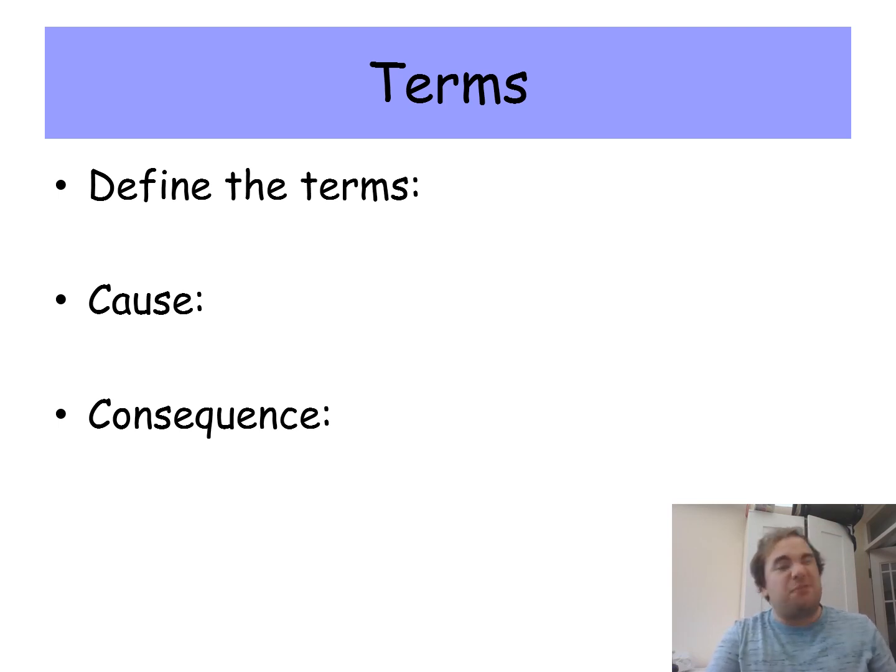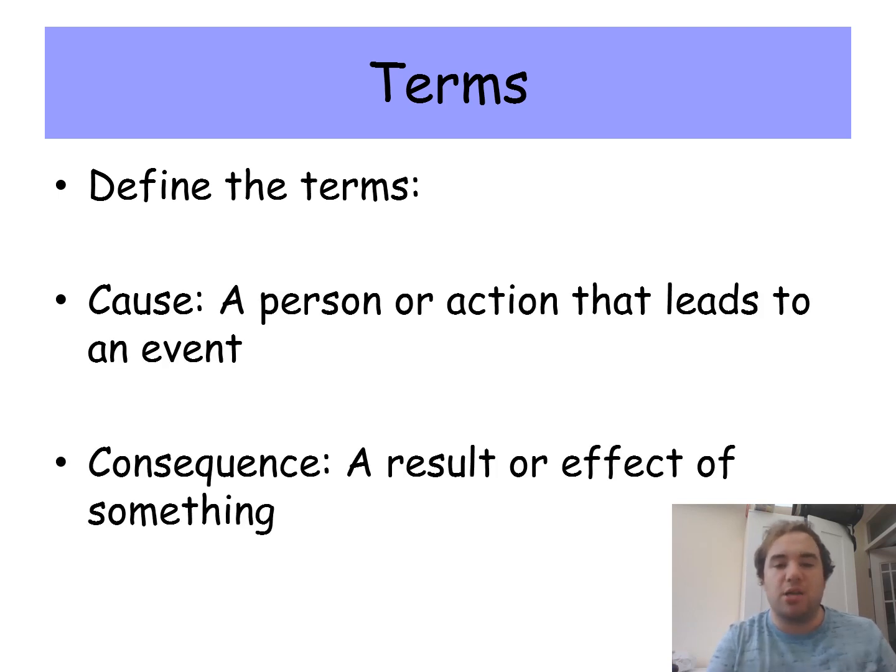An exact definition, a dictionary definition, would be that a cause is a person or action that leads to an event, and a consequence is a result or effect of something. So make sure you've got those two definitions of cause and consequence that are along those lines in your book.